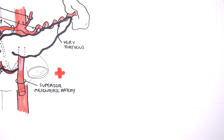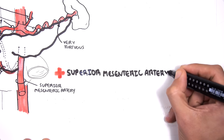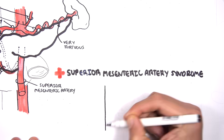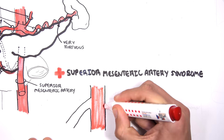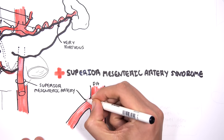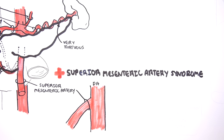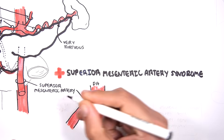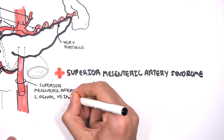A clinical condition called superior mesenteric artery (SMA) syndrome is a rare condition in which the duodenum is compressed between the superior mesenteric artery and the abdominal aorta. The superior mesenteric artery branches from the descending aorta and runs over the duodenum; just under the SMA runs the left renal vein.